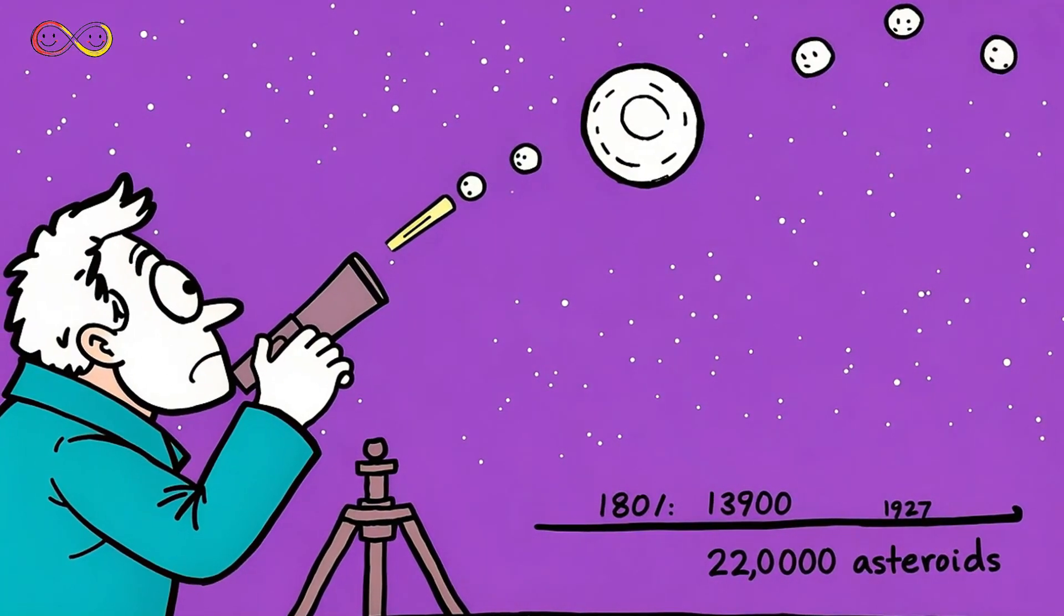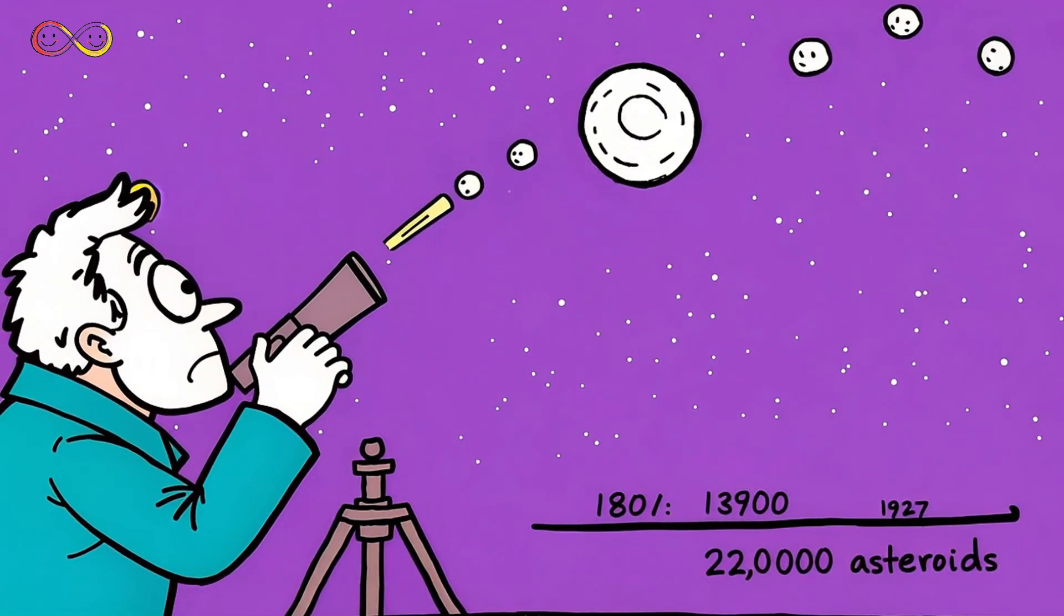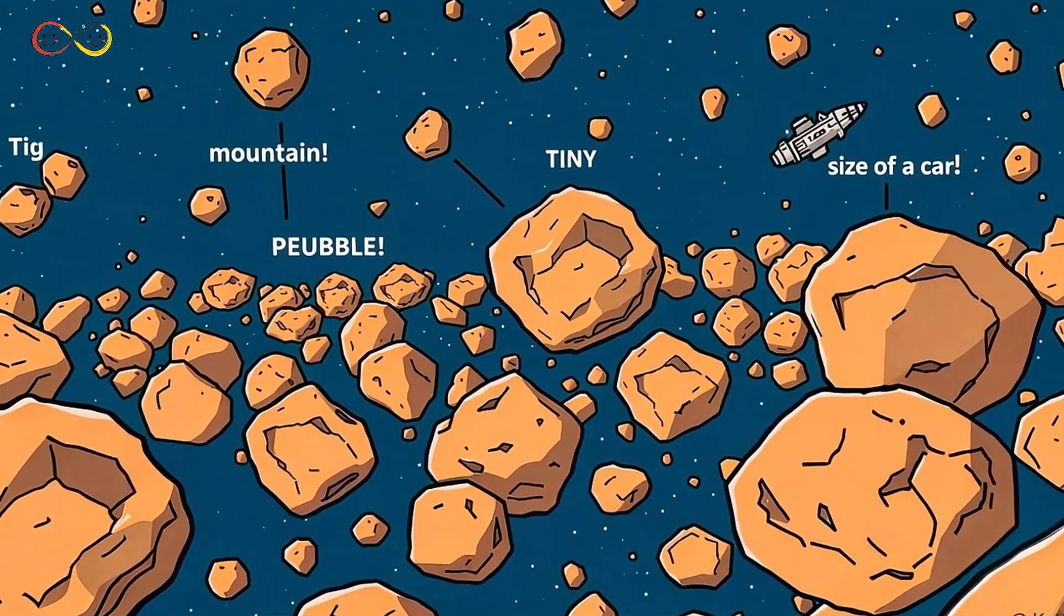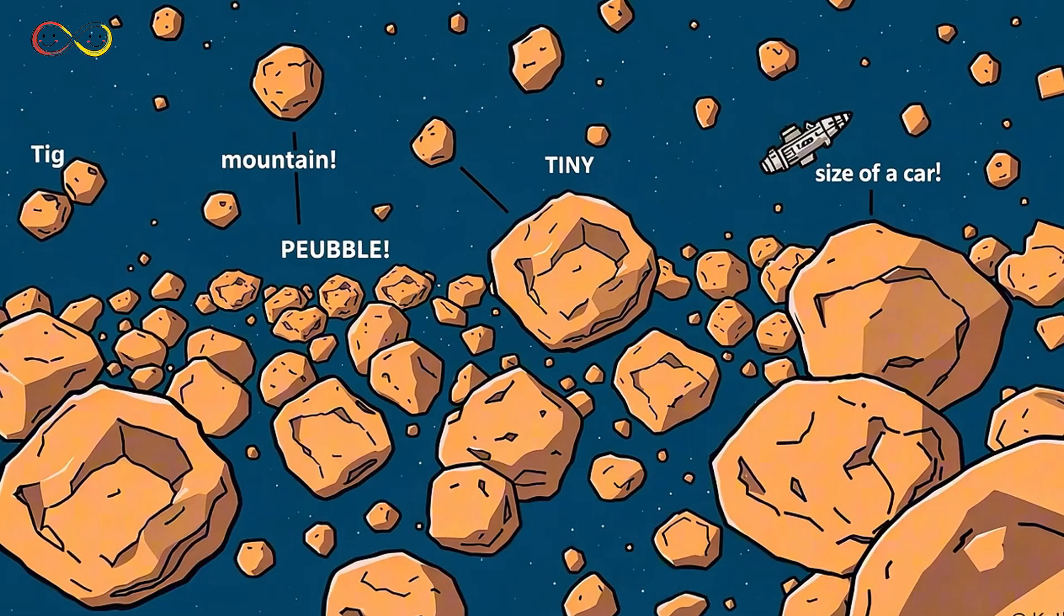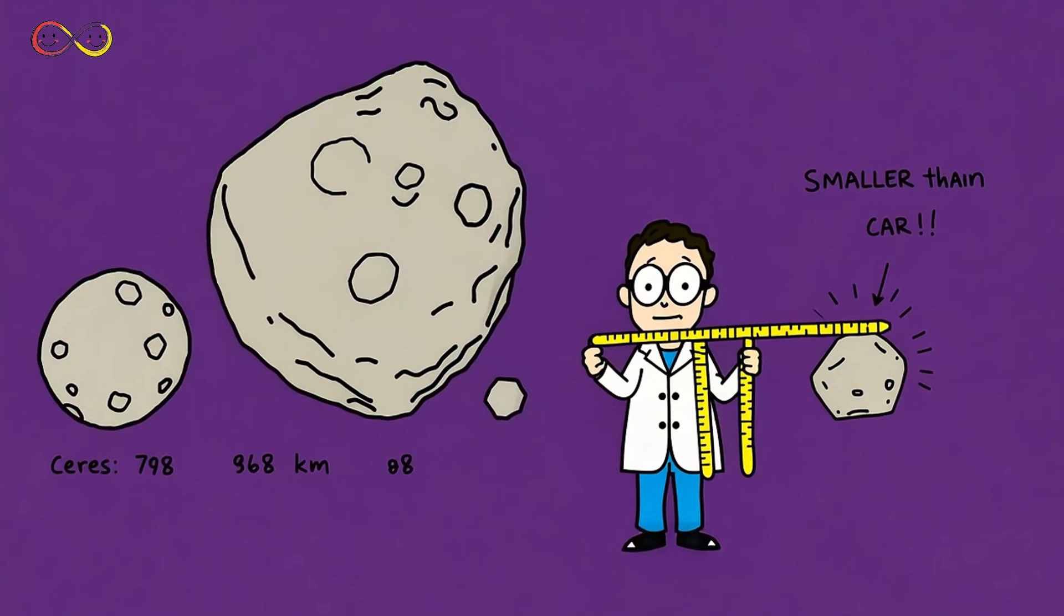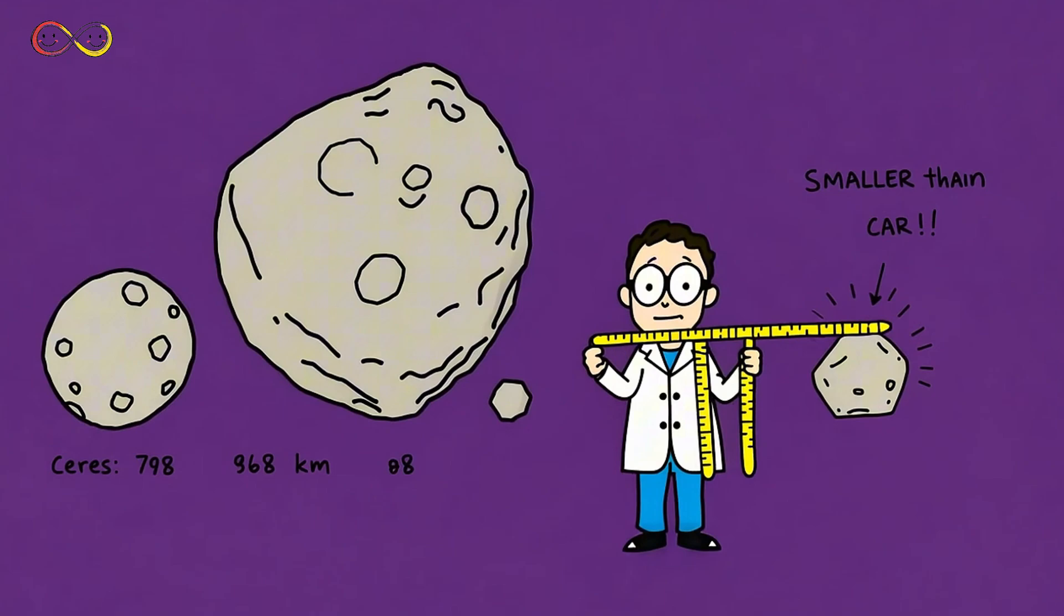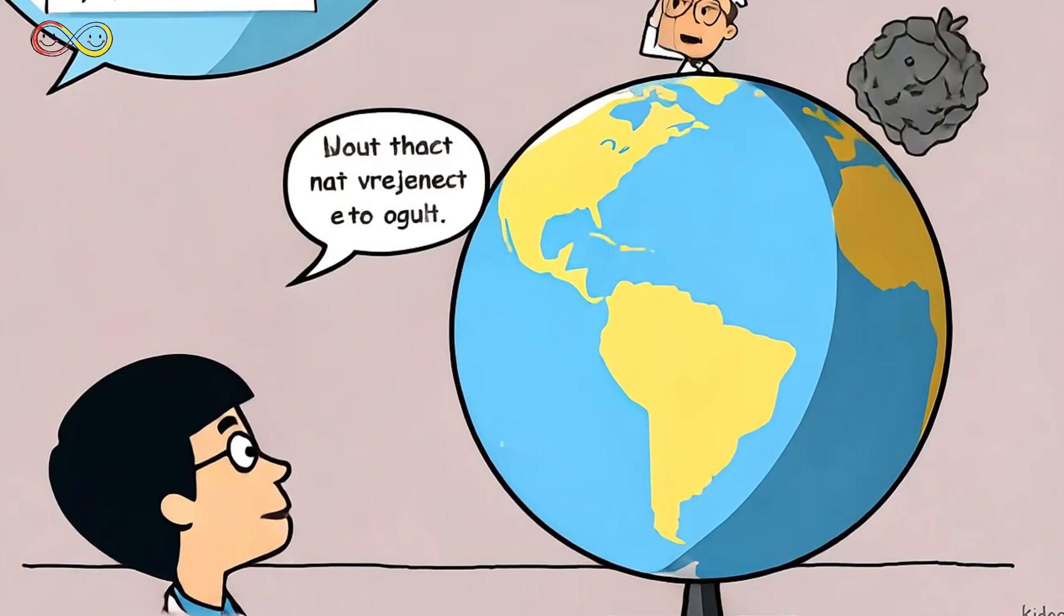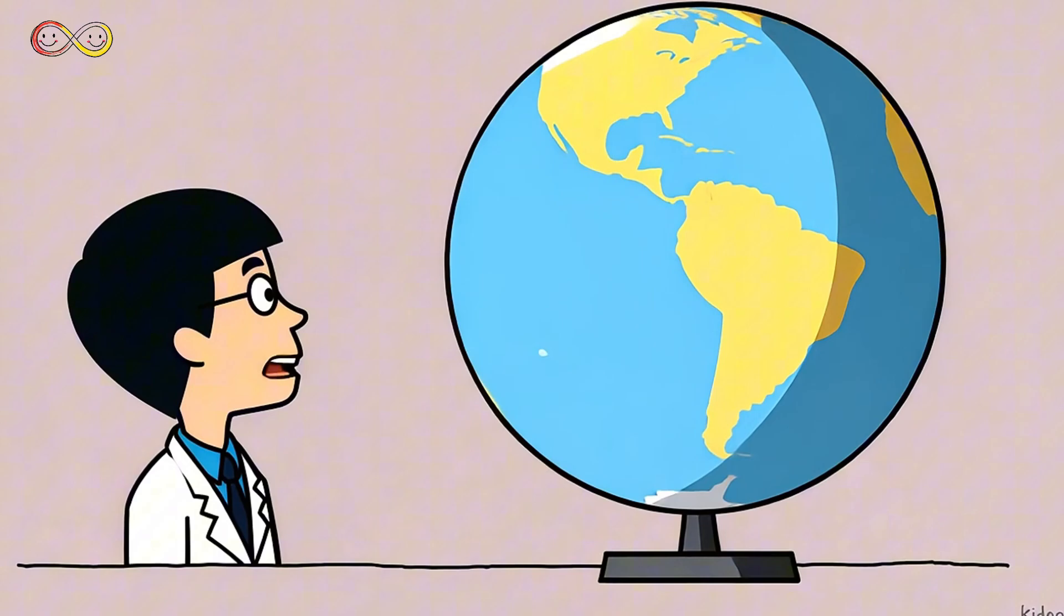At first, astronomers found only a few asteroids. But as telescopes improved, they kept discovering more, hundreds, then thousands, then millions. Today, scientists estimate there are millions of asteroids in the asteroid belt. Some are as big as mountains, while others are just tiny space pebbles. Scientists measure their sizes. Even if we combined all the asteroids into one, they'd still be only one three-thousandth the mass of Earth, a tiny speck compared to our planet.